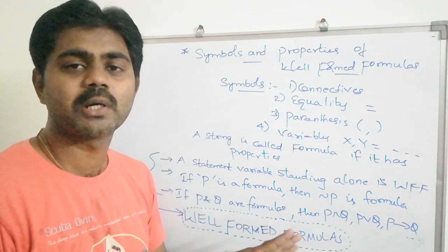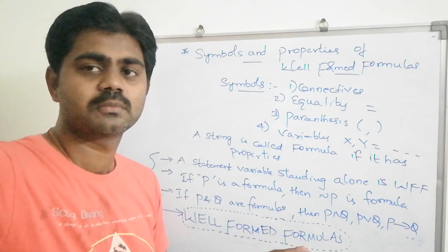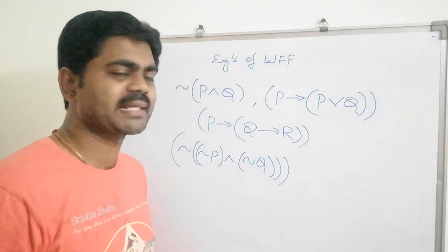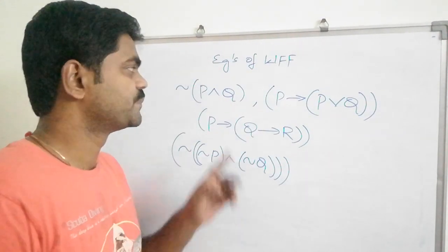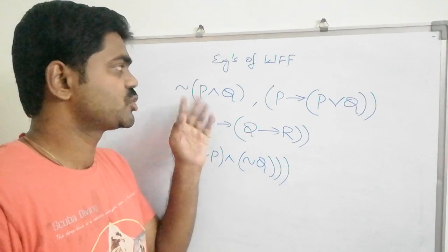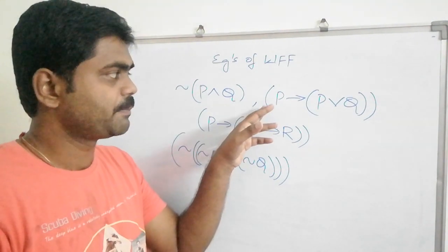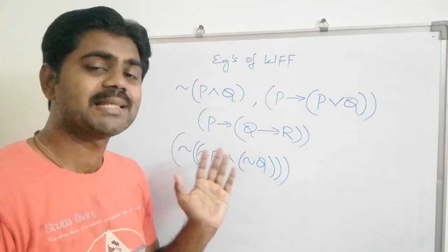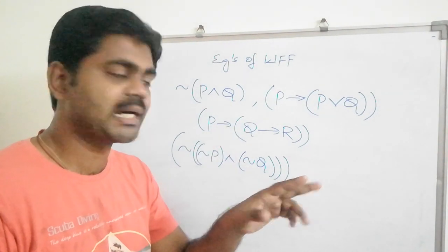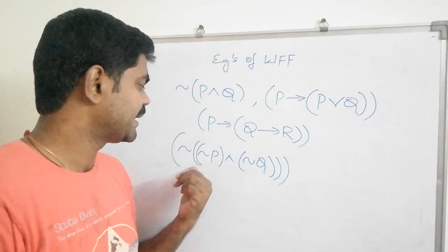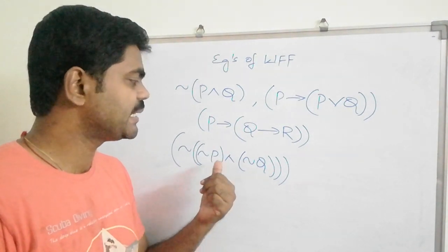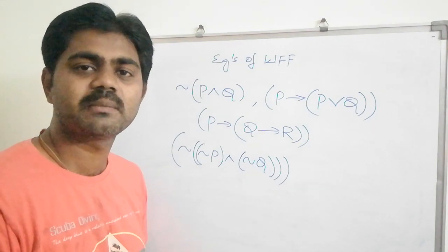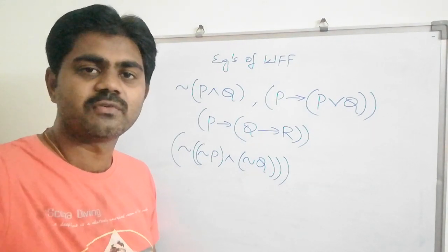Here are some basic examples of well formed formulas: negation of (P and Q), P implies (P or Q), P implies Q implies R, and negation of (negation P and negation Q). We have many such examples of well formed formulas.